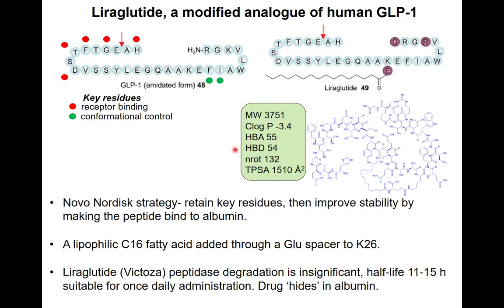We'll now look at drugs that work by a different principle: minimizing the interaction between GLP-1 and the enzyme DPP-4 that destroys it. The first successful drug using this approach is liraglutide from Novo Nordisk, a pioneer in diabetes research. In the human GLP-1 sequence, the alanine position cut by DPP-4 and key residues in red important for receptor binding should not be changed when designing an analog.